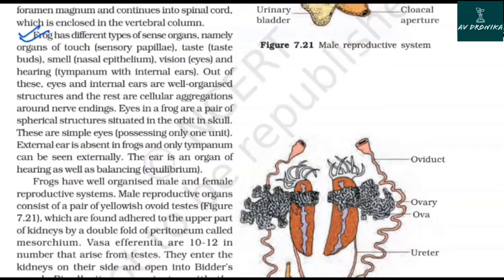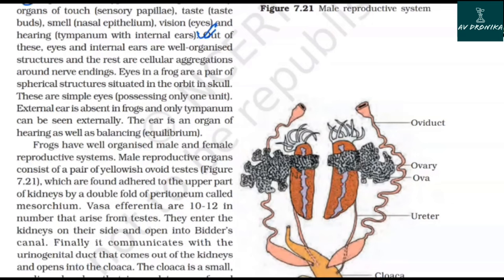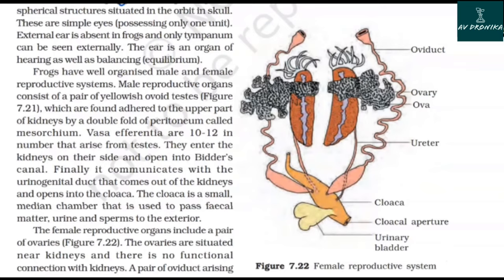Frogs have different types of sense organs: organs of touch (sensory papillae), taste (taste buds), smell (nasal epithelium), vision (eyes), and hearing (tympanum and internal ears). Eyes and internal ears are well-organized structures; the rest are cellular aggregations around nerve endings. The eyes are a pair of spherical structures situated in the orbit of the skull — simple eyes possessing only one unit. External ears are absent; only the tympanum can be seen externally. The ear is an organ of both hearing and balancing (equilibrium).